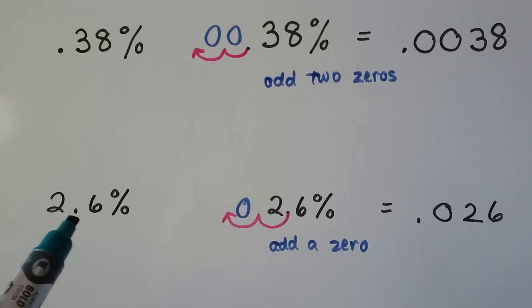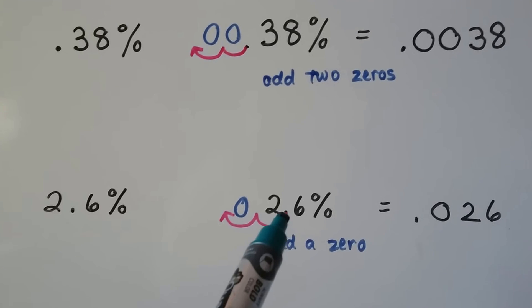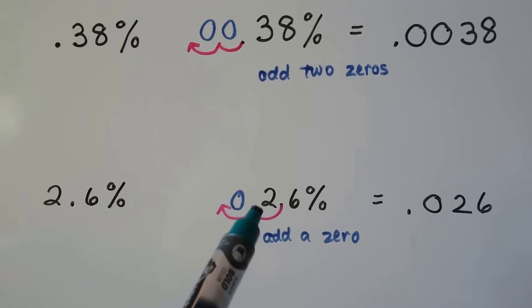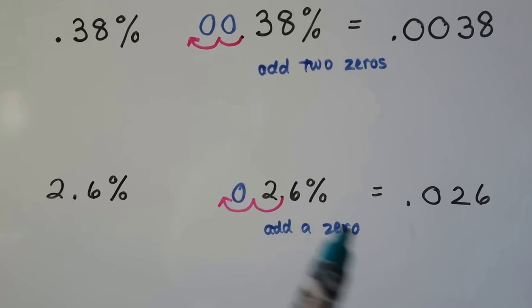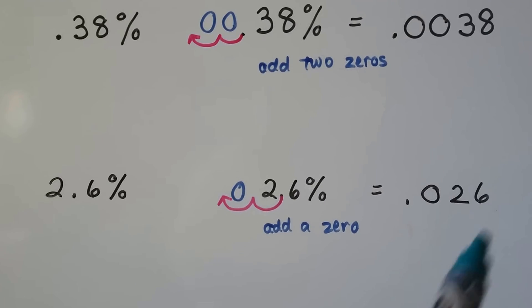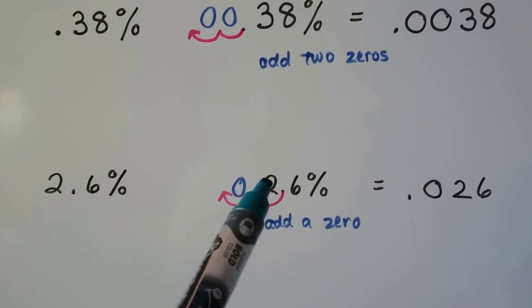Here we've got a decimal place right here. So we're going to start from that decimal point and go one, two, put a zero for a placeholder, get rid of the percentage sign, and we have 0.026.